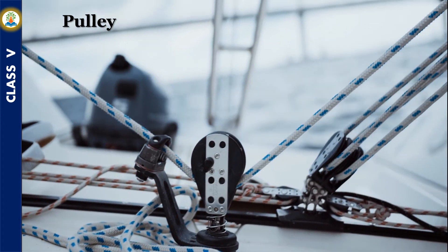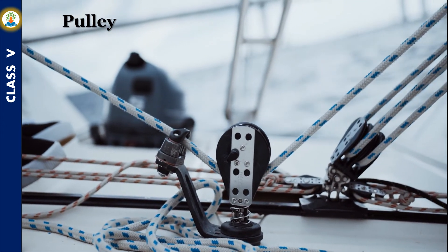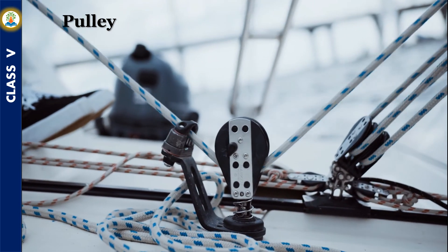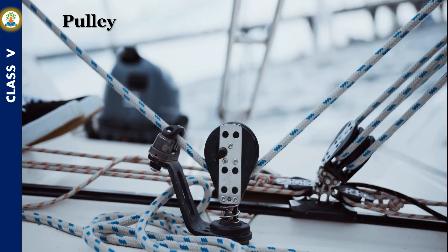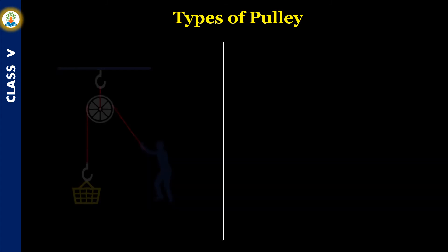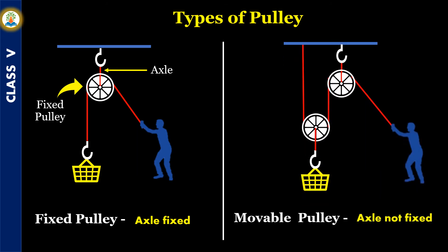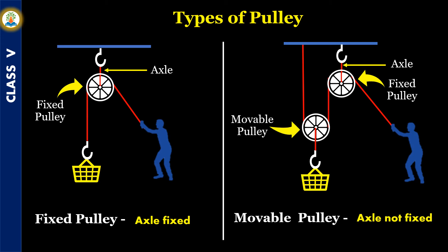A pulley is a grooved wheel with a rope running through it. The wheel rotates around a stationary axle — at one end of the rope the load is attached, while on the other end the effort is applied. A pulley can be of two types. When the axle is fixed to some kind of support like a hook or a wall, it is known as a fixed pulley. A fixed pulley is used to lift a bucket of water from a well. In a movable pulley, the axle is not fixed to any support — for example, a crane uses both fixed and movable pulleys to lift heavy loads.